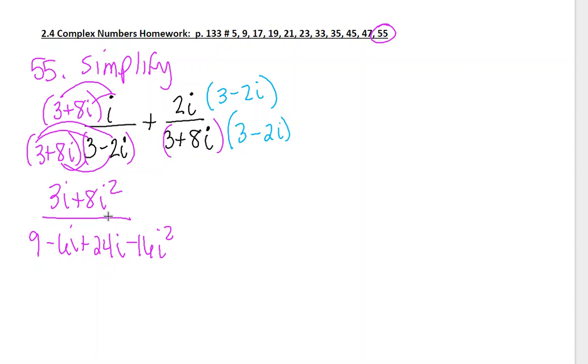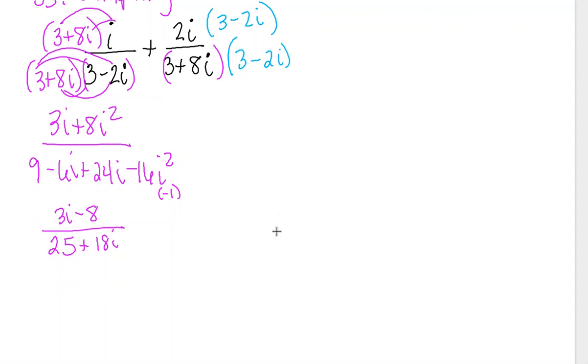If I simplify that and change each of those i squared to negative 1, I end up with 3i minus 8 over—this is negative 1, so that's positive 16 plus 9, which ends up being 25 plus—negative 6i plus 24i is 18i. Look at that, the denominator still has an i in it.